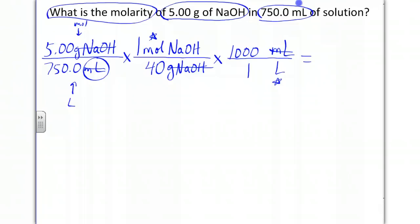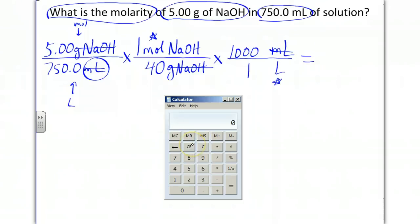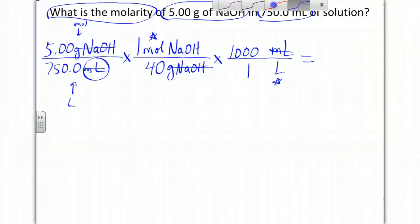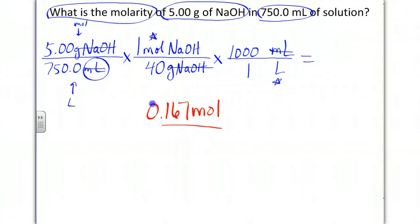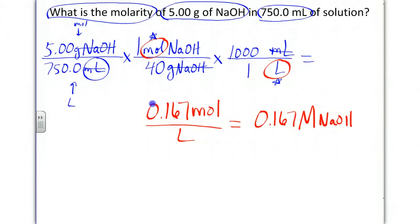As everything has canceled properly, we can get our final answer: 5.00 divided by 750.0 divided by 40 times 1,000 gives us 0.167, and that's moles over liter. This is the same thing as writing 0.167 molar sodium hydroxide. This is how the final answer should be expressed.